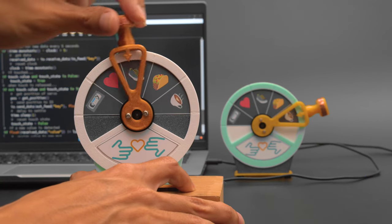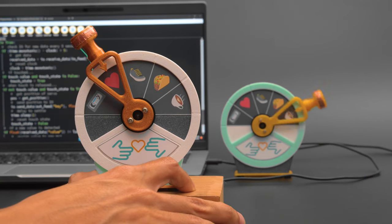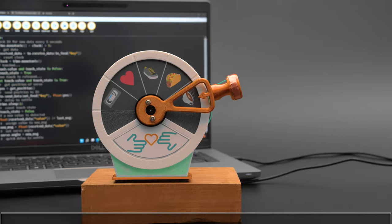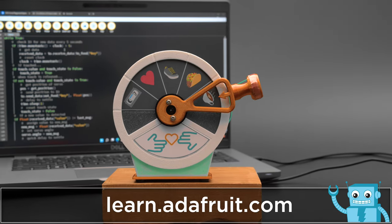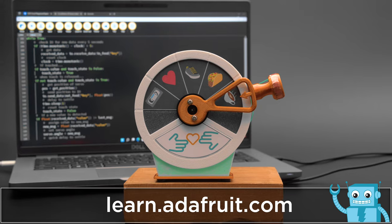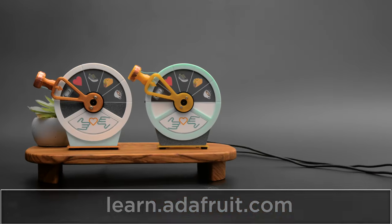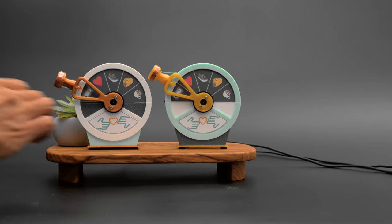Each telegraph has one feed for publishing and a second feed for listening. To build your own, be sure to check out the guide on learn.adafruit.com. We hope this inspires you to check out Circuit Python and Adafruit IO for your next IoT project.